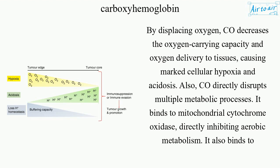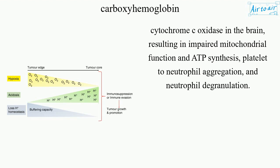CO also binds to cytochrome C oxidase in the brain, resulting in impaired mitochondrial function and ATP synthesis, platelet-to-neutrophil aggregation, and neutrophil degranulation.